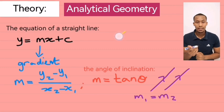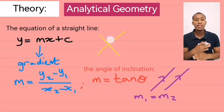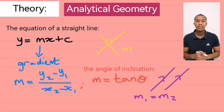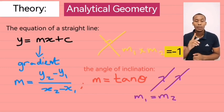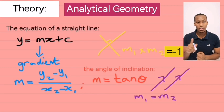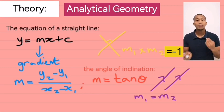And here's another thing. If lines are perpendicular to each other, then the product of the gradients will be negative 1. Now, product indicates multiplication. So, what I'm saying is, if you multiply the two gradients by each other, then our answer will be negative 1.